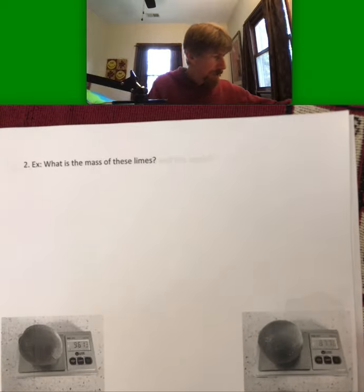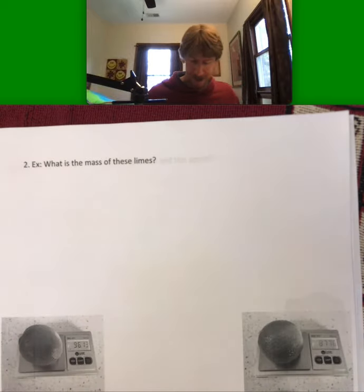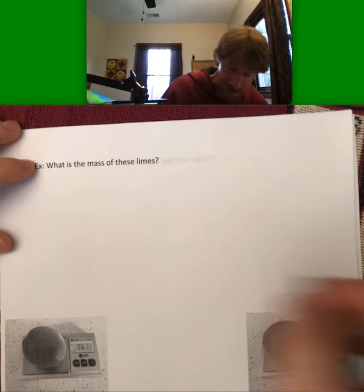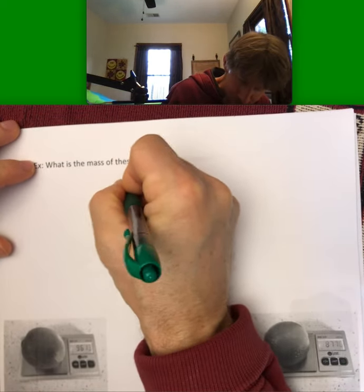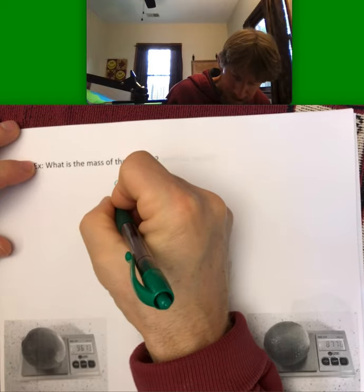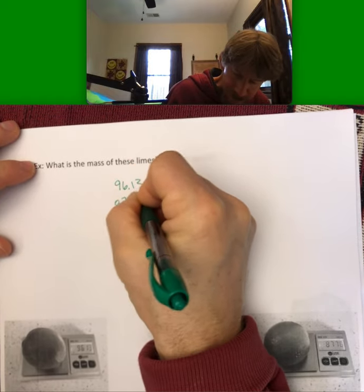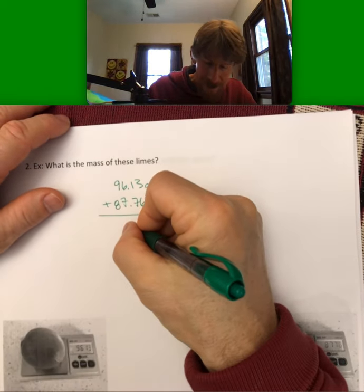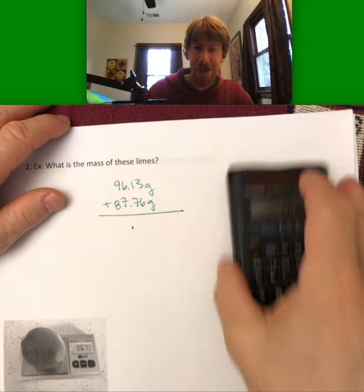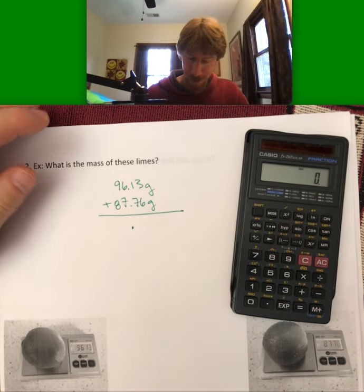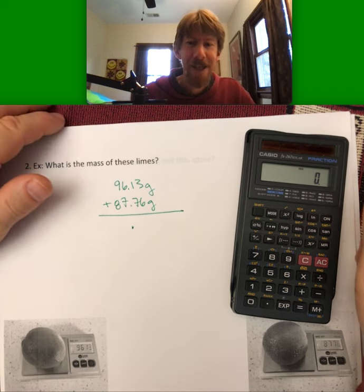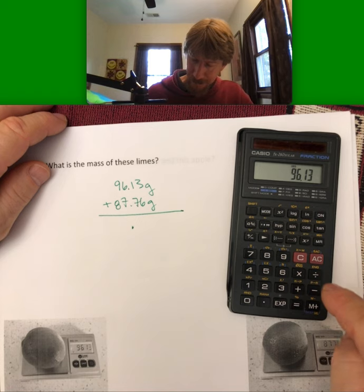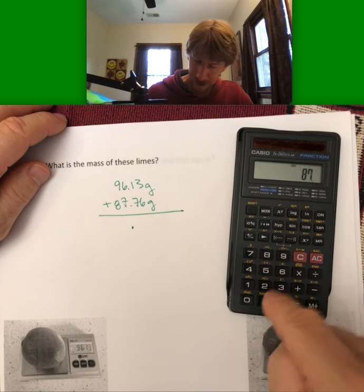What is the mass of these two limes? Yes, I went through all my fruit for this. So 96.13. Add them up. Keep your decimal place in the same position. And this is what you're going to be doing on the homework, too. Look for more pictures of my fruit when you do the homework.